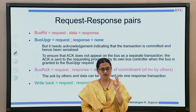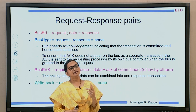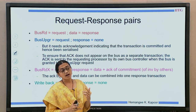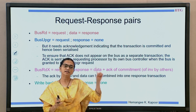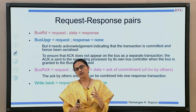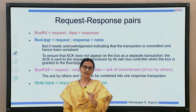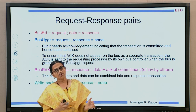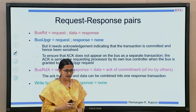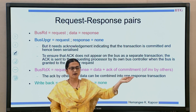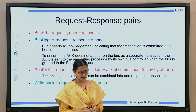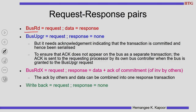The third type of request is bus redex. Bus redex expects a data response, but apart from data it also expects other processors to invalidate the block — so you need two things: data and acknowledgement of invalidation, both part of the response. The fourth type of transaction is write back, which is only a request because we are sending the block as part of the request and there is no response. So we have these four transaction types, each identified by its request and response phases.